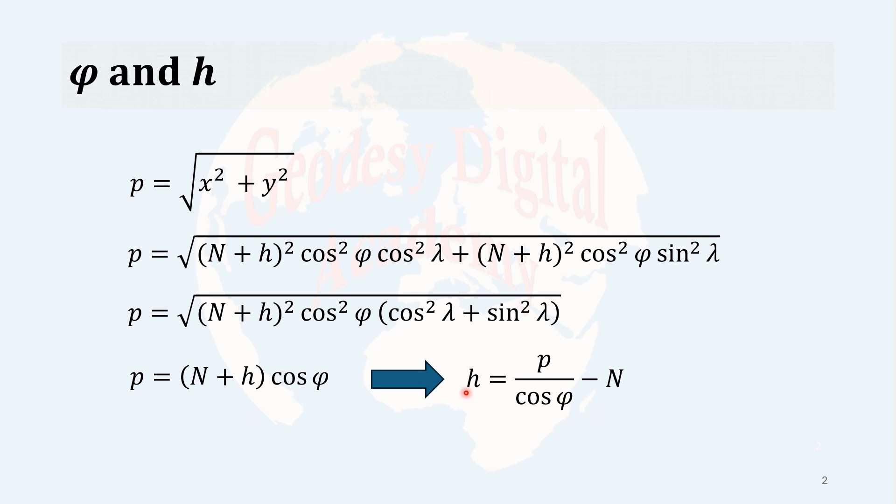So, as you see, if I solve h from this formula, I come to simply do this. This formula says that if I have p, which I already have from Cartesian coordinates, I can determine h, or the geodetic height, if I have n and phi. Phi, or the geodetic latitude, is also unknown for us. And also, n itself is also a function of the geodetic latitude as well. So, it is important that first we determine the geodetic latitude to compute the geodetic height.